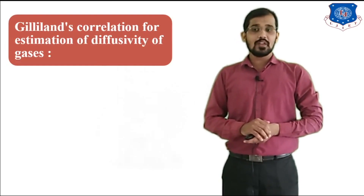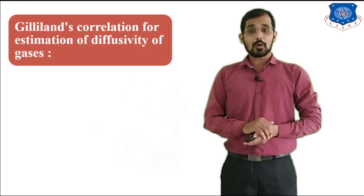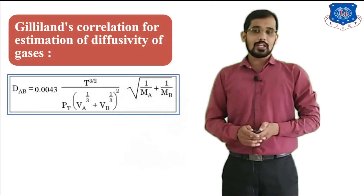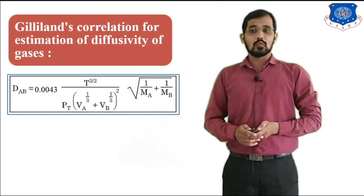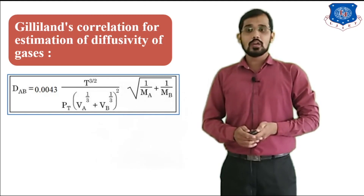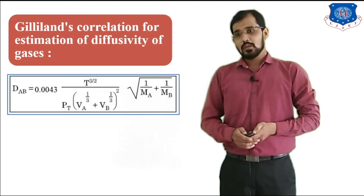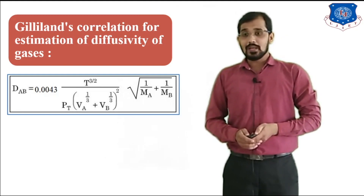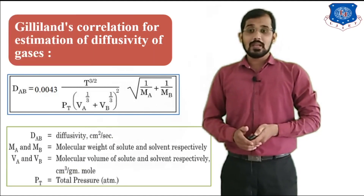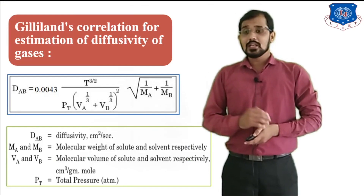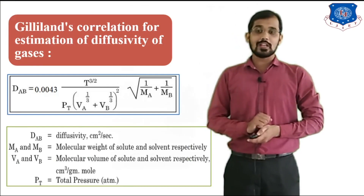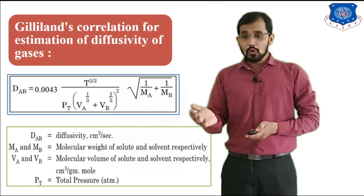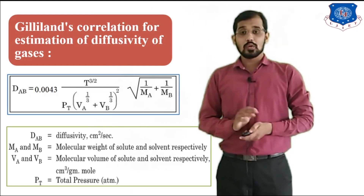The next relation is the Gilliland correlation for estimation of diffusivity of gases. According to Gilliland, DAB equals 0.0043 × T^(3/2) divided by [PT × (VA^(1/3) + VB^(1/3))² × √(1/MA + 1/MB)]. Here, DAB is the diffusion coefficient of A with respect to B in cm²/s, T is temperature, PT is total pressure in atm, VA and VB are molecular volumes of solute and solvent in cm³/g·mol, and MA and MB are molecular weights of solute and solvent.